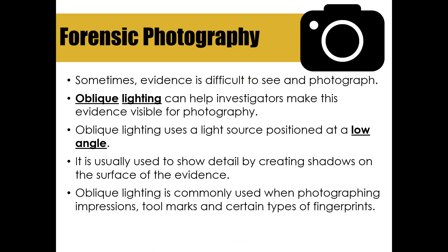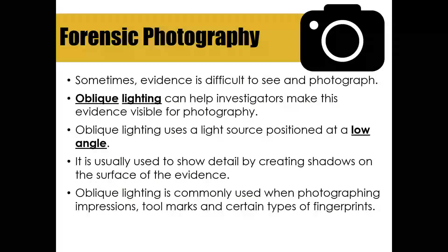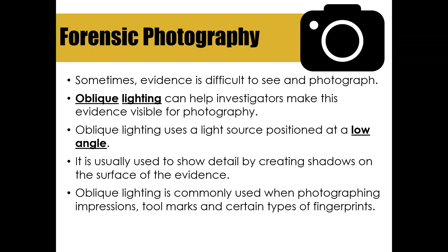Sometimes evidence is difficult to see and photograph, so we utilize a technique called oblique lighting. Oblique lighting helps investigators make evidence visible so that it can be photographed. It uses a light source like a flashlight positioned at a low angle, which casts a shadow on the surface of the evidence and makes it visible when photographed. Oblique lighting is commonly used when photographing impressions, tool marks, and certain types of fingerprints.